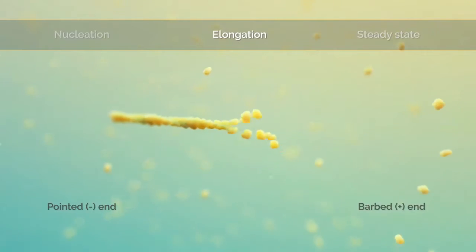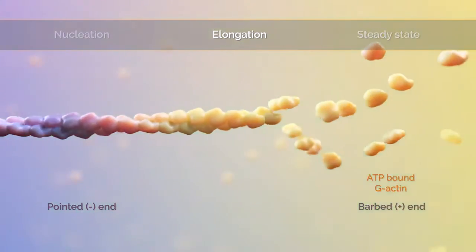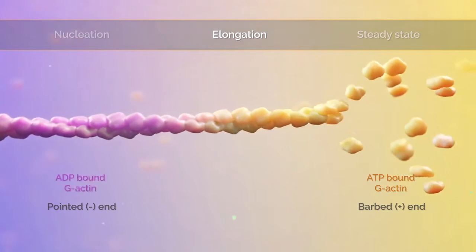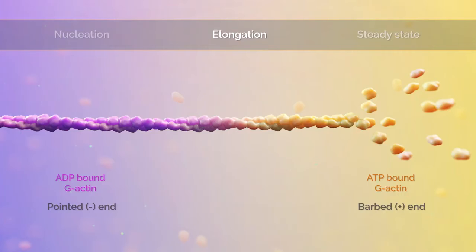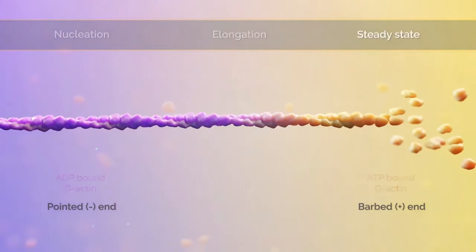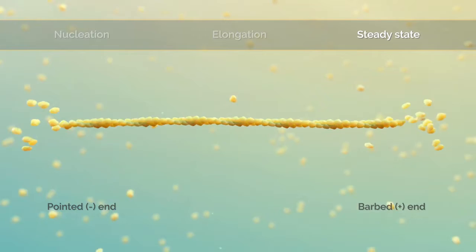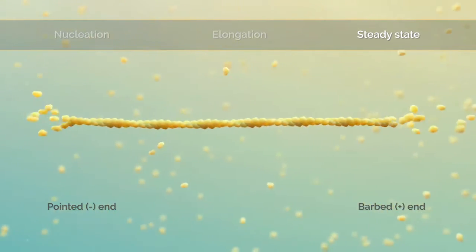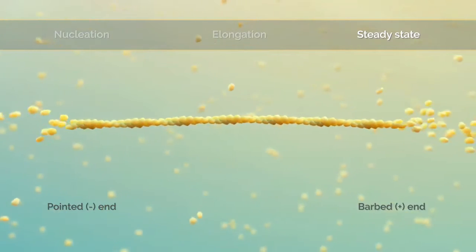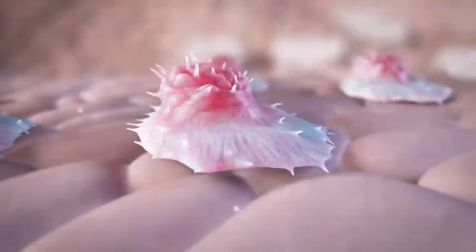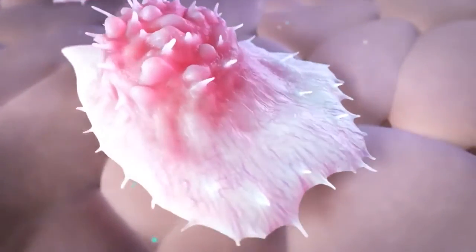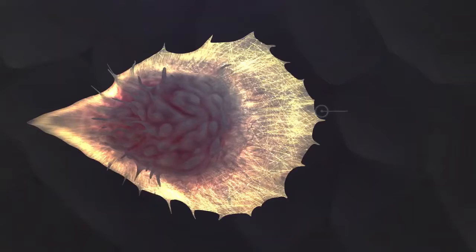Bound G-actin monomers undergo ATP hydrolysis, producing an increase of ADP-bound G-actins at the pointed end of the filament. These G-actins disassociate more readily than the ATP-bound G-actins at the barbed end. Thus, actin filaments undergo treadmilling as the reaction reaches a steady state — G-actin monomers are constantly added to the barbed end and removed from the pointed end. At the leading edge of a moving cell, actin filaments are continuously treadmilling.